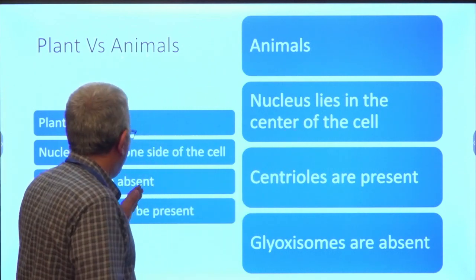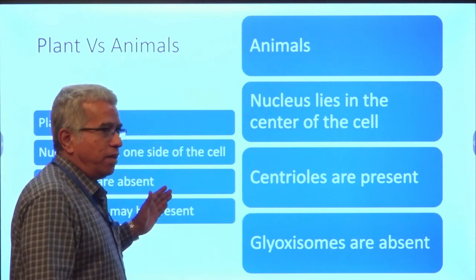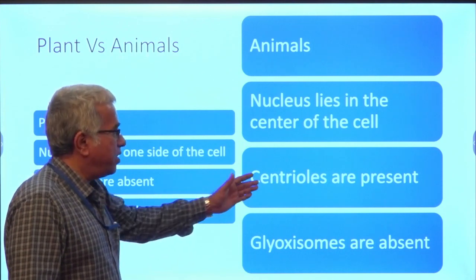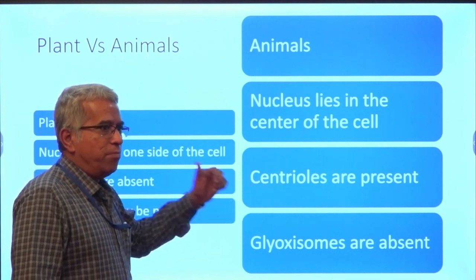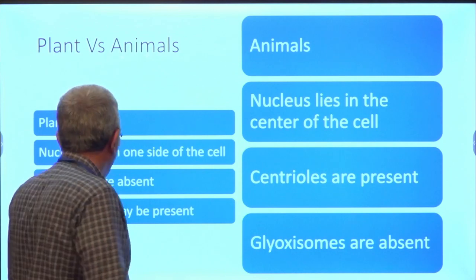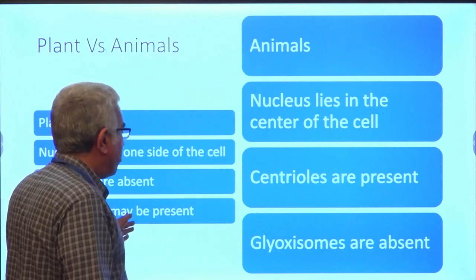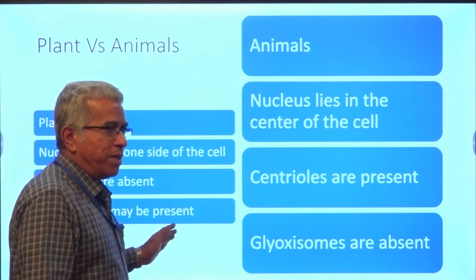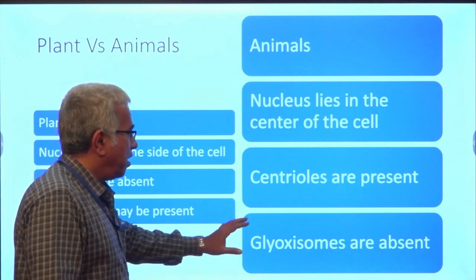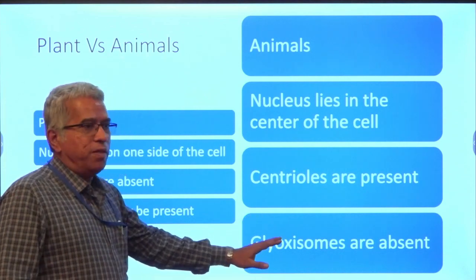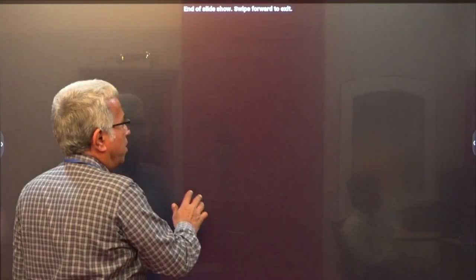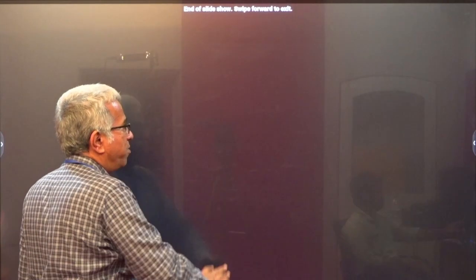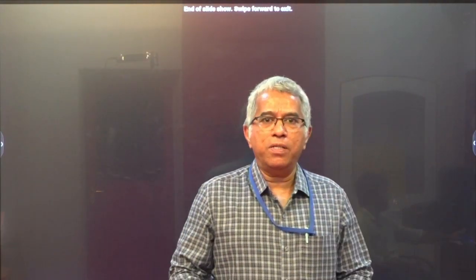Centrioles are absent in plant cells whereas centrioles are present in animal cells. Glyoxysomes may be present in plants but are totally absent in animal cells. These are some of the differences between plant cells and animal cells.